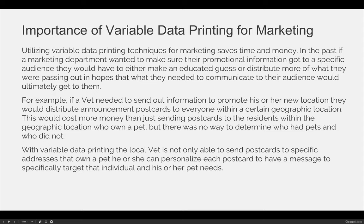But there was no way to determine who had pets and who did not, and more importantly, there was no way to physically automate that process. If we were going to print a million postcards, every postcard had to be exactly the same. Digital printing allows for the printing of variable data content. With variable data printing, the local vet is not only able to send postcards to specific addresses that own a pet, but can also personalize each postcard to specifically target that individual and their pet needs.